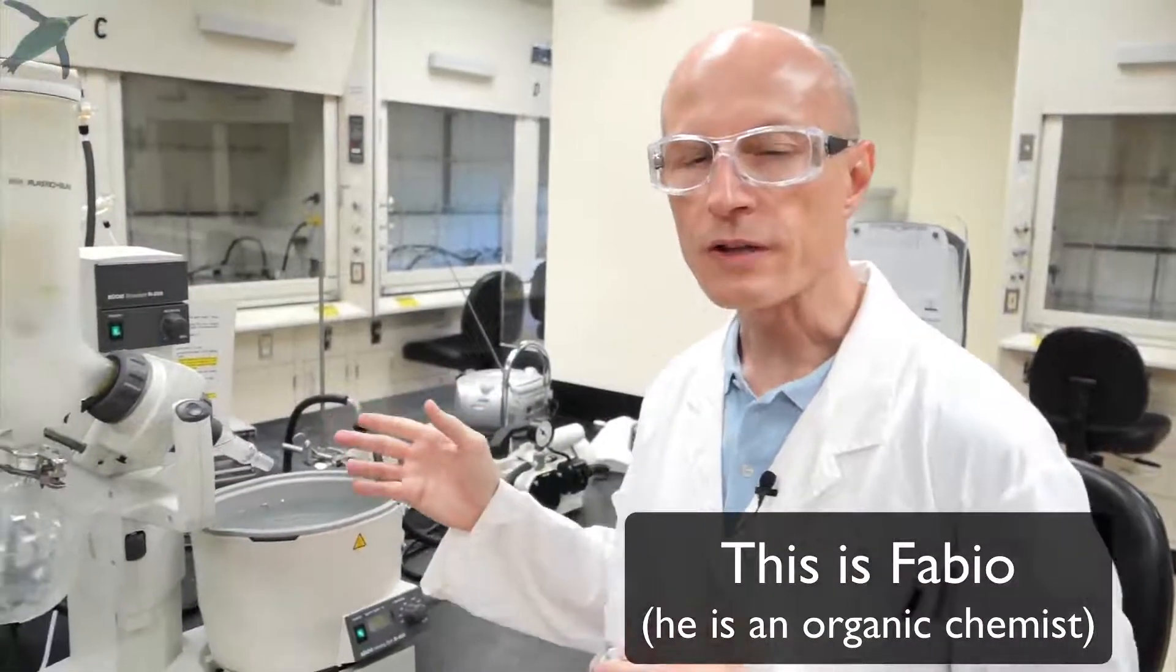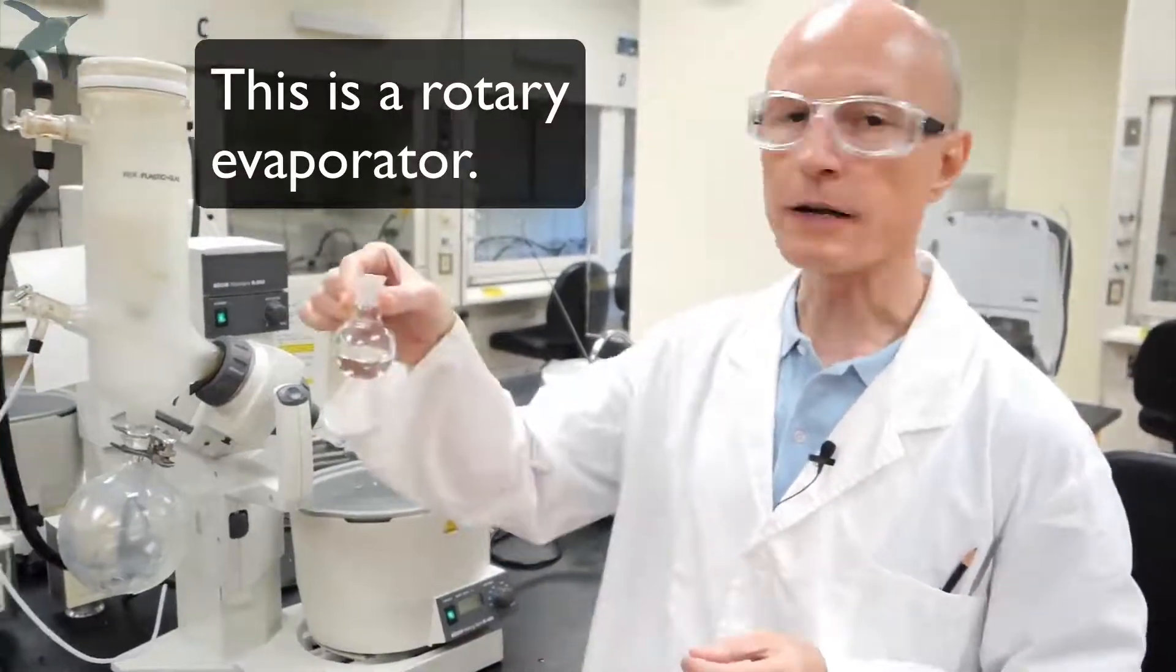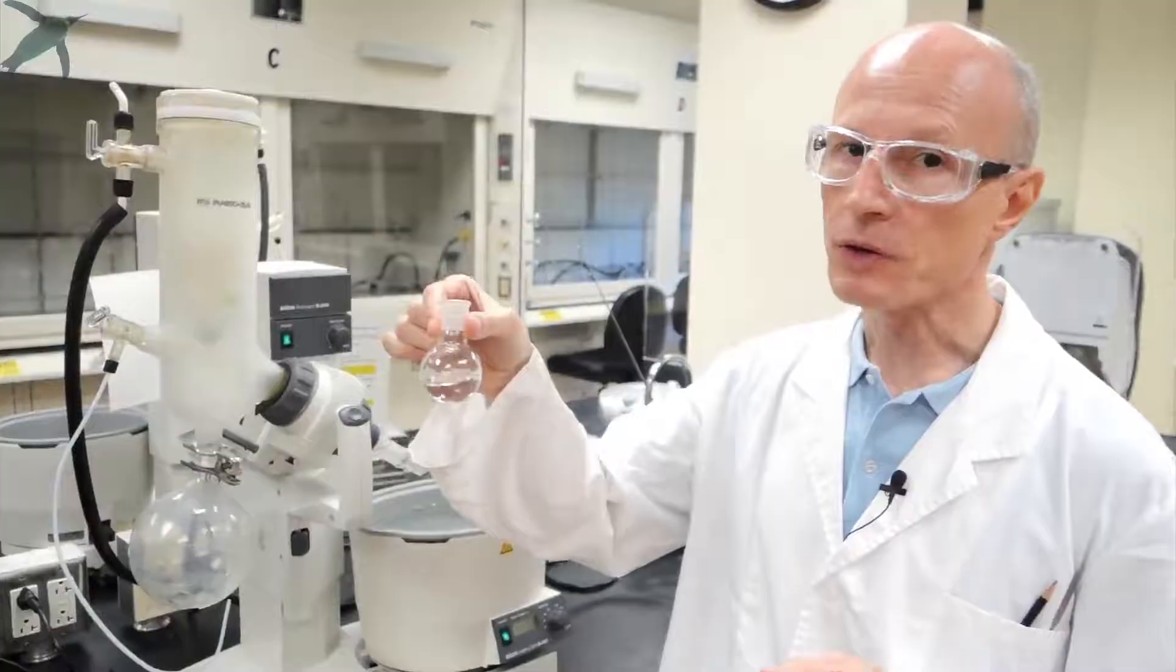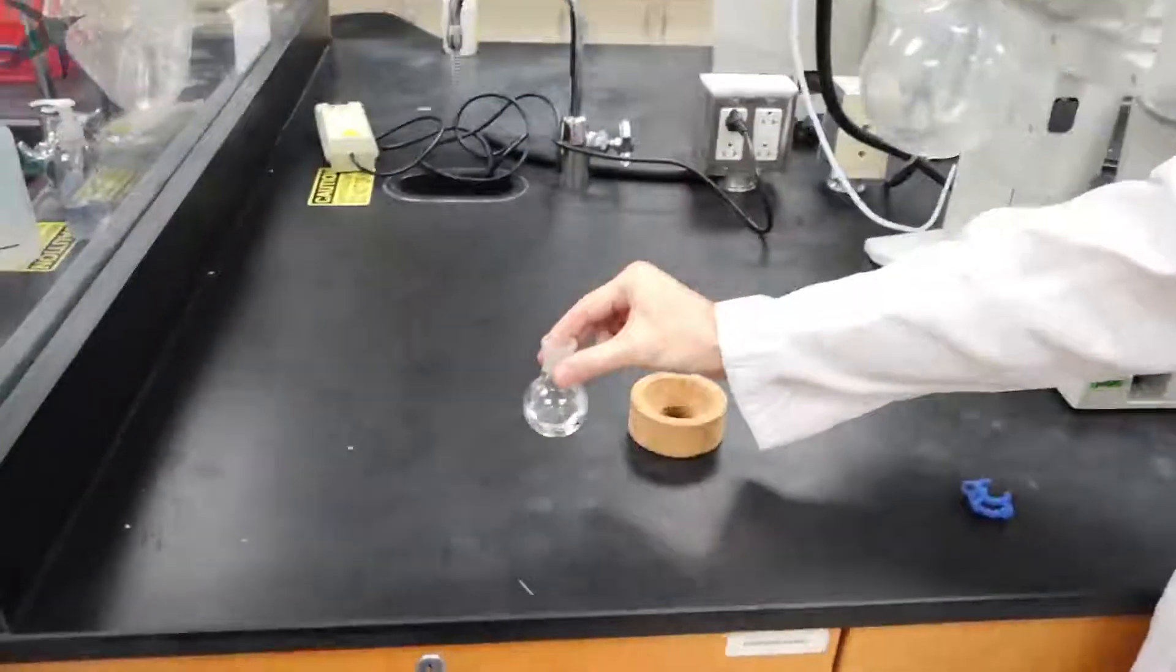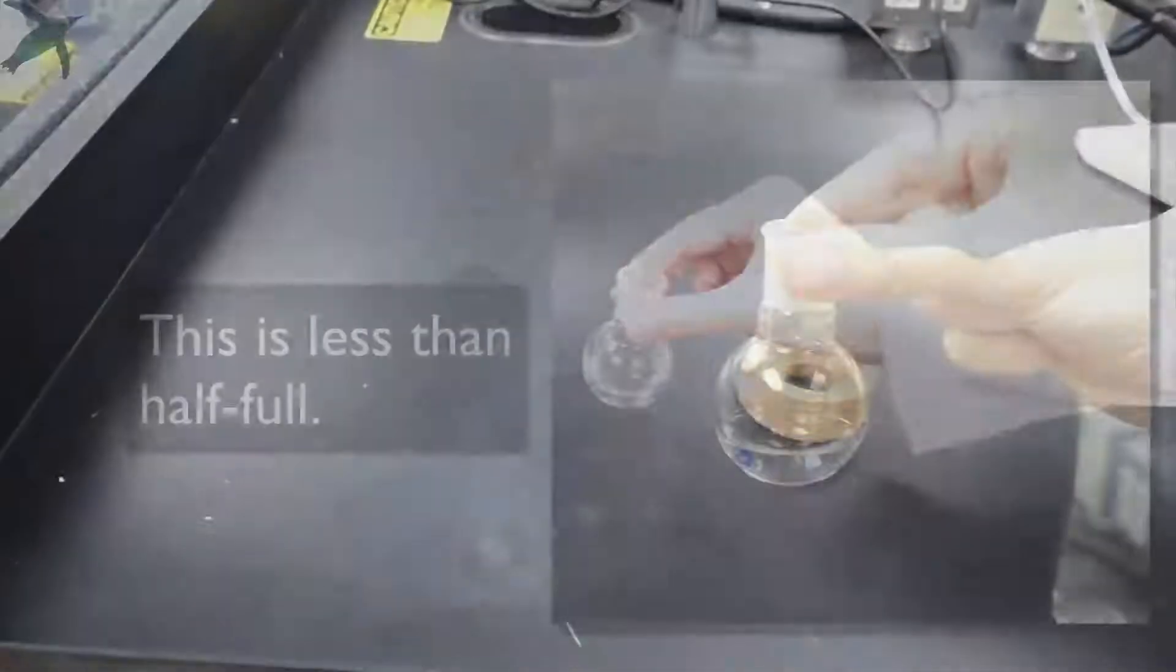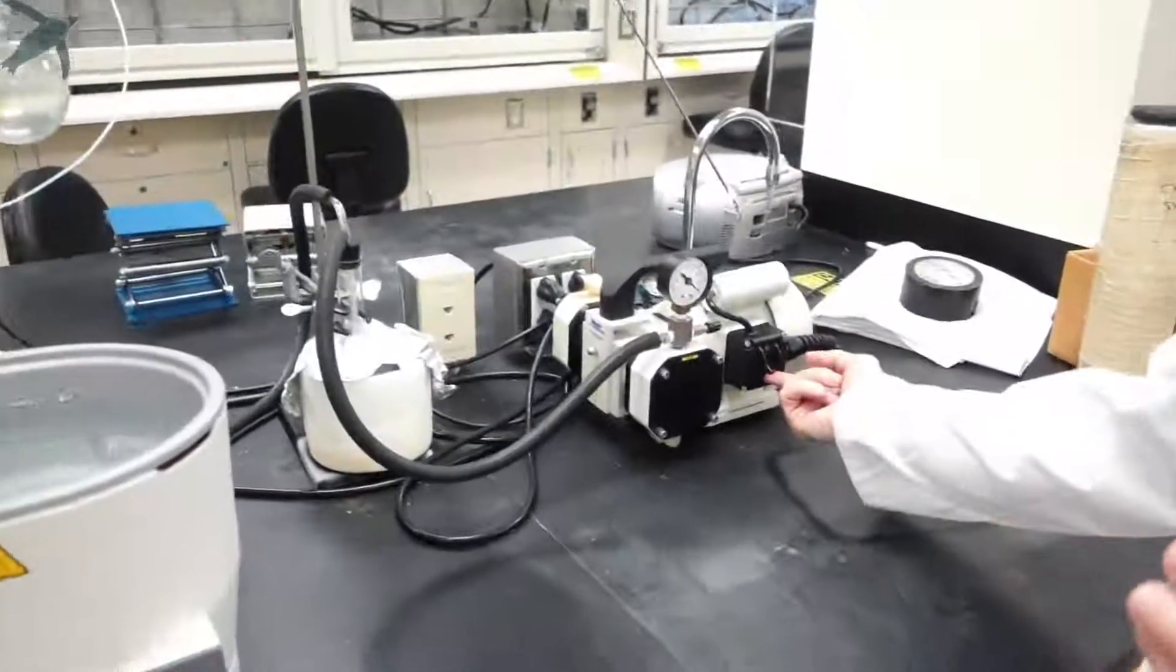The Rotary Evaporator or Rotavap is used to remove organic solvents from solutions that are in a round bottom flask. Before you use the Rotavapor, make sure that your round bottom flask is less than half full and that the vacuum pump is on.